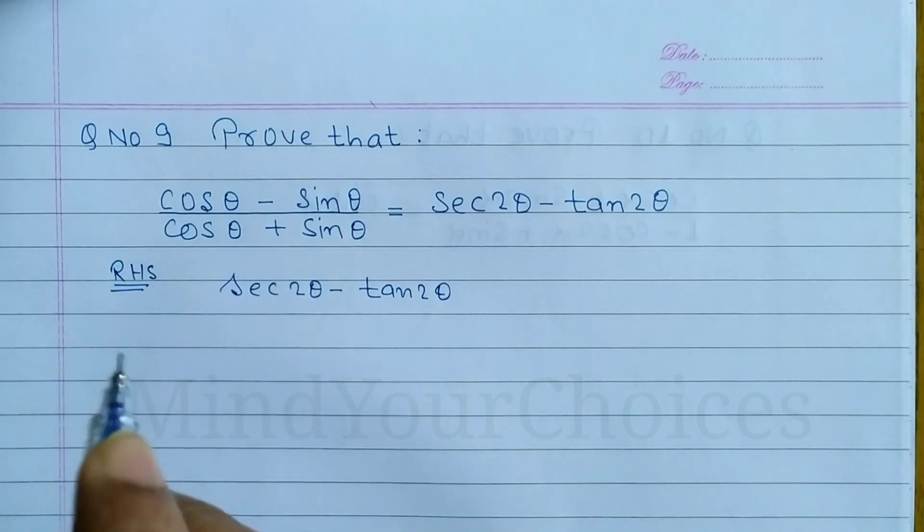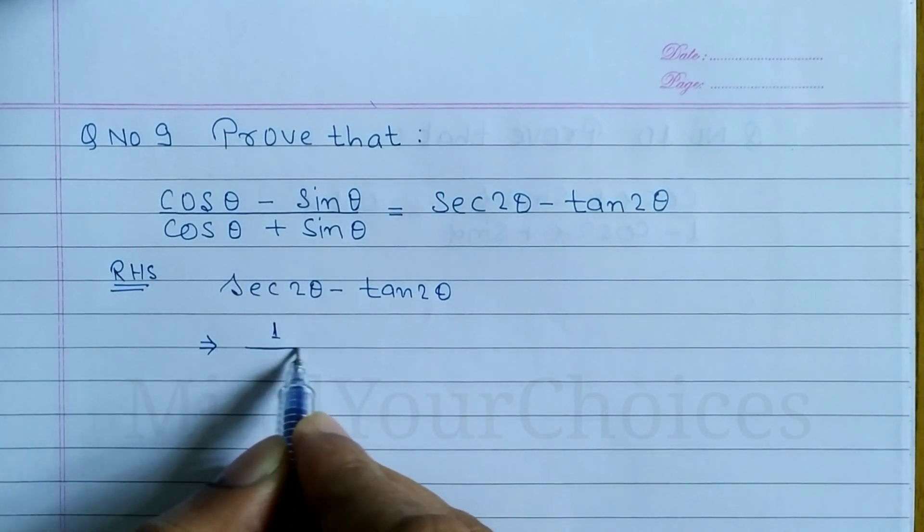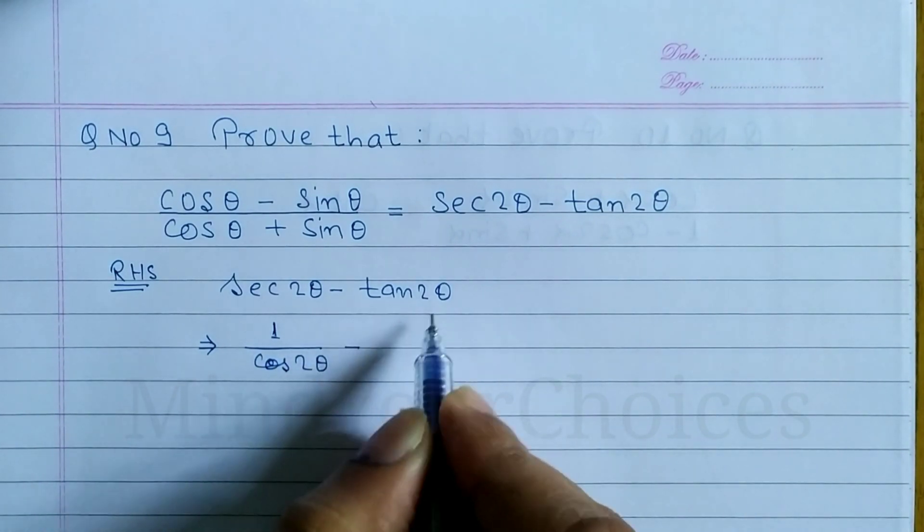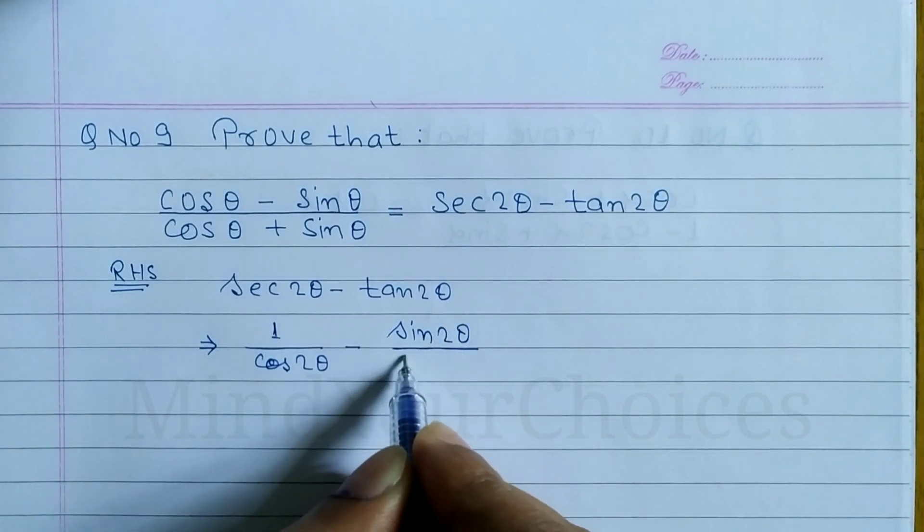So sec 2 theta, the formula is 1 by cos 2 theta. Similarly, tan 2 theta is sin 2 theta divided by cos 2 theta. This is the formula.